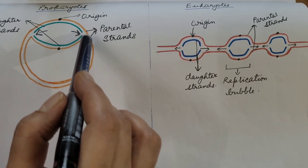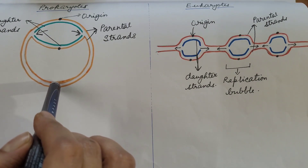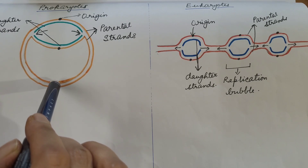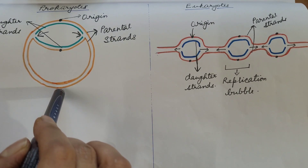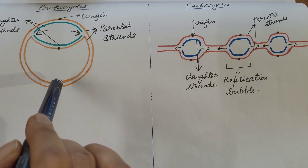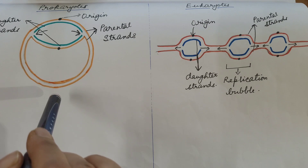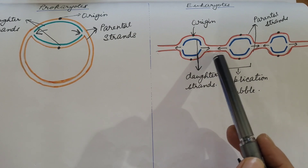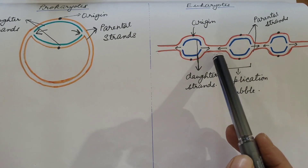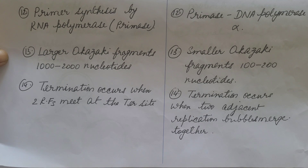In prokaryotes, the two replication forks move in opposite directions, and in the region diametrically opposite to the origin of replication there is the ter site. When the two replication forks meet and are arrested at the ter site, termination takes place, producing two circular double-stranded DNA molecules. In eukaryotes, when two adjacent replication bubbles merge, termination of replication takes place — this will be discussed in detail in a separate video on the termination step of eukaryotic DNA replication.